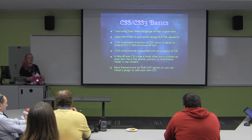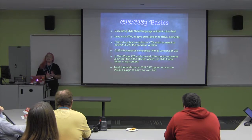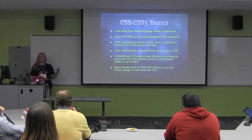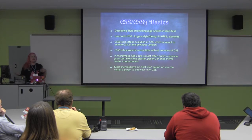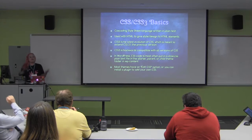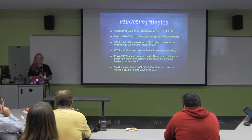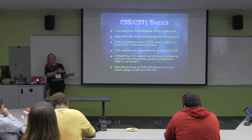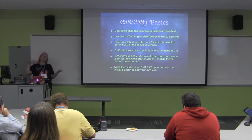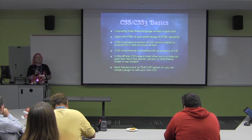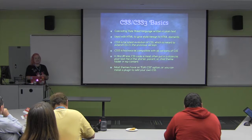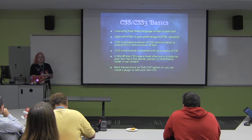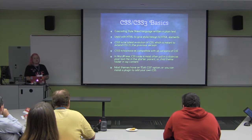CSS is a cascading style sheet language used with HTML to give style and design to HTML templates. CSS3 is the latest evolution of CSS, meant to add on to the previous version, which was 2.1. When we say CSS, there's not really a version attached - it's usually CSS 2.1 with some CSS3 added in. CSS3 is backwards compatible with all versions. In WordPress, CSS is most often put into a plain text file called style.css in either the parent theme, starter theme, or child theme folder in WP content. Most themes have an edit CSS option, or you can install a plugin to add your own CSS.